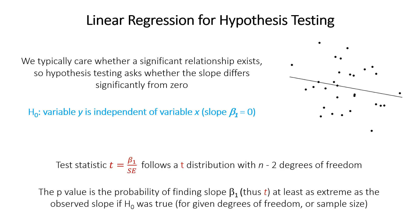The test statistic is a t-statistic, calculated by dividing the slope β1 by the standard error of that estimate. This t-statistic follows a t-distribution, so we can get a p-value from it. The p-value is the probability of finding a slope at least as extreme as the one we observed if the null hypothesis were true. If the slope is too different from zero — too far from what we'd expect by chance — we conclude it's unlikely enough to reject the null hypothesis. Traditionally this is done when our p-value is less than 0.05.